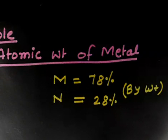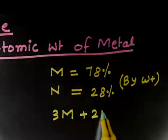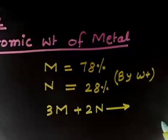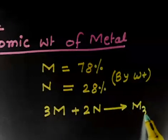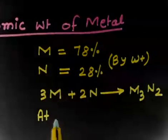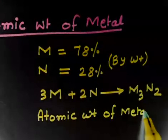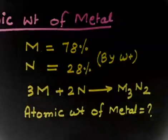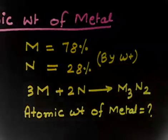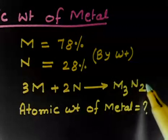The question says 3 atoms of metal combine with 2 atoms of nitrogen to form the compound. So the compound formula will be M₃N₂ — that is 3 atoms of metal and 2 atoms of nitrogen. We have to find the atomic weight of metal. We know the percentage of metal and nitrogen, and the formula of the compound is M₃N₂.